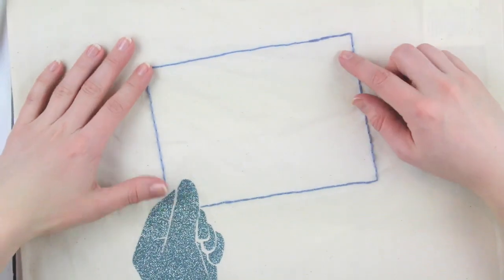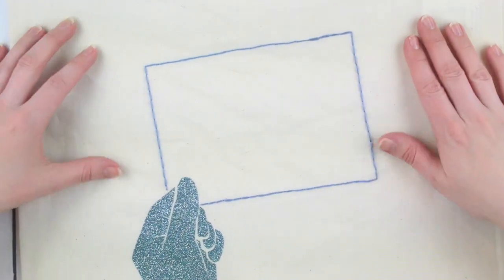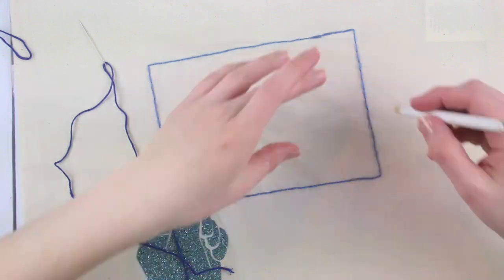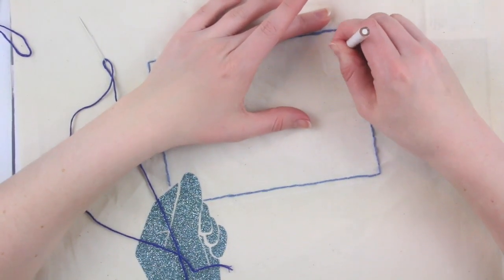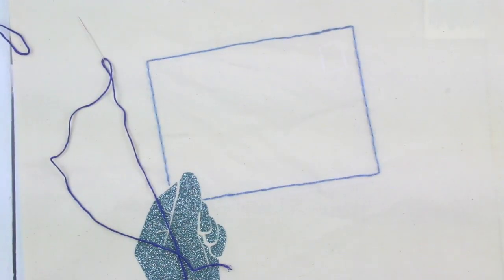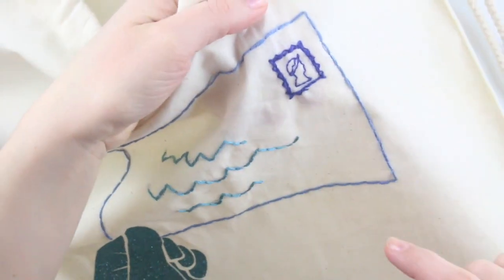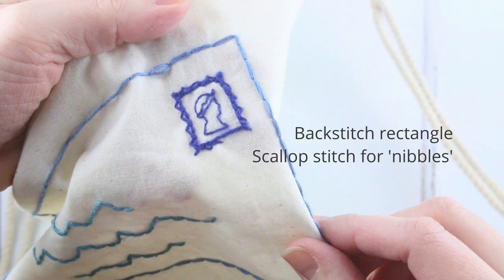To sew the stamp and the writing on the envelope, first thread your needle with a different colour of thread, use all 6 strands and tie a knot in the other end. Use a white pencil to draw a rectangle where the stamp will be and sew around the rectangle with backstitch as you did before. To create the nibbles around the edge of the stamp, we'll use lines of scallop stitch.